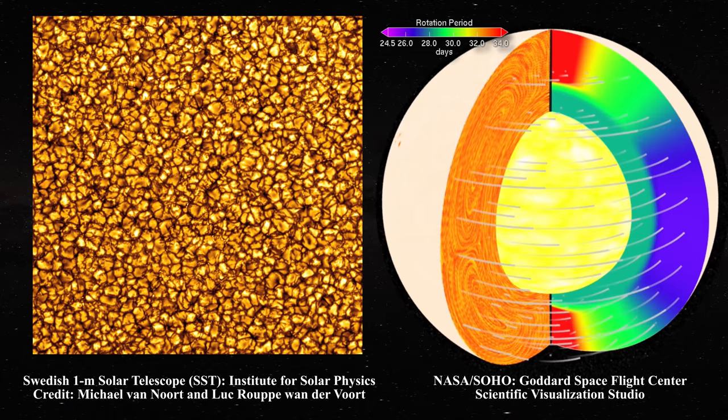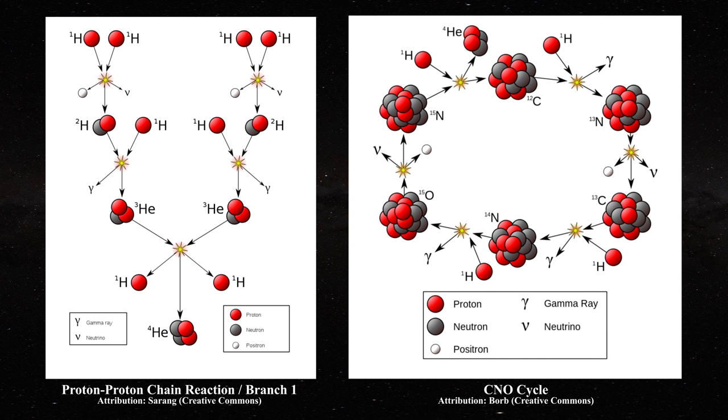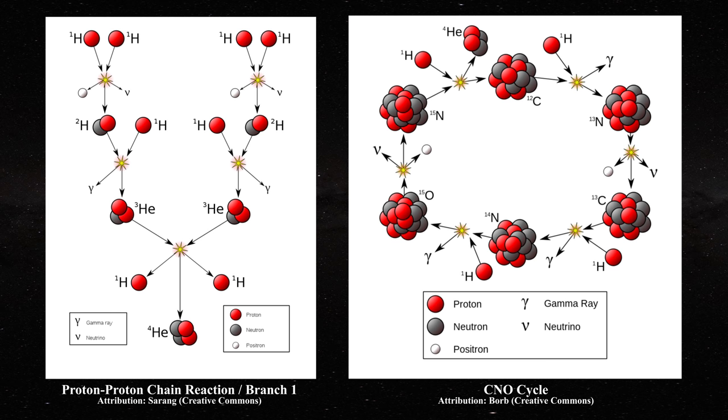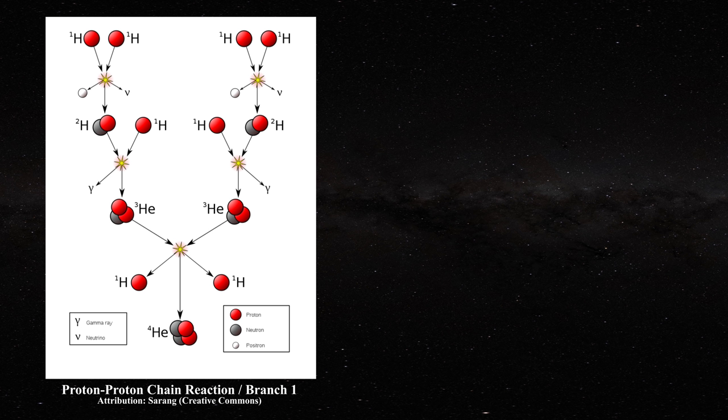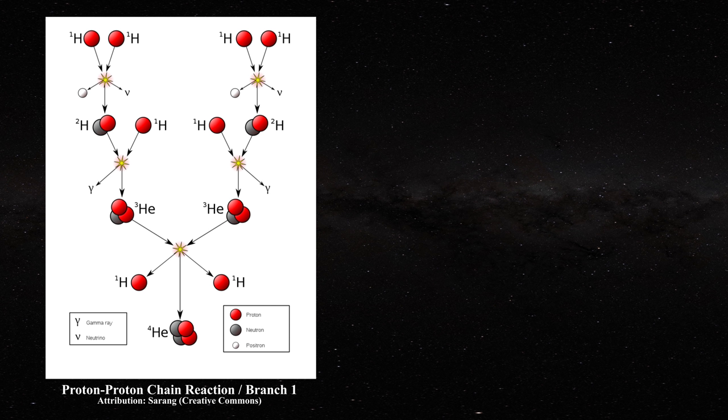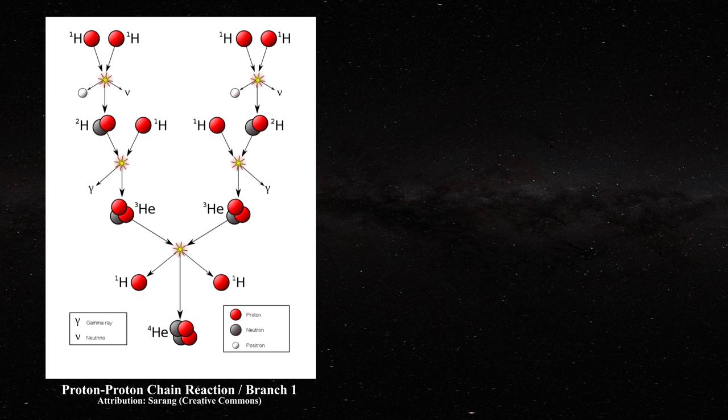Currently it is advanced that the PP reaction and the CNO cycle are the only significant reactions that exist in the Sun. Here is a view of branch 1 of the PP reaction. That branch is thought to exist in the Sun. The first step of this reaction involves the combination of two protons to make a deuterium atom. But the cross section of this reaction has never been measured on Earth.